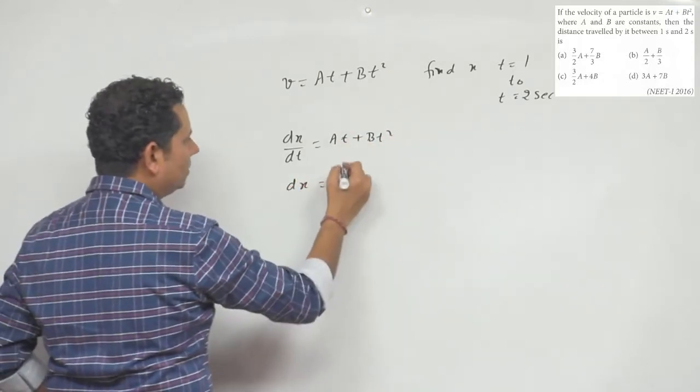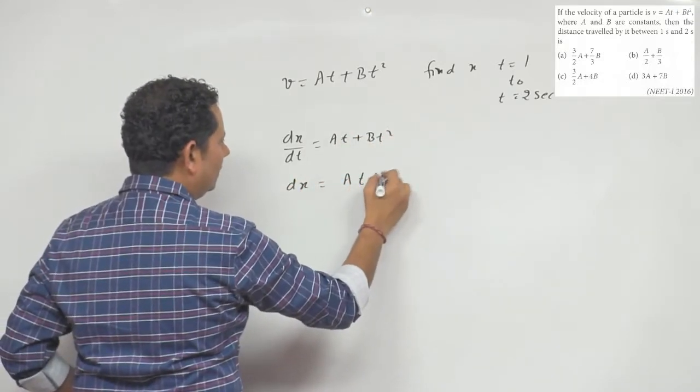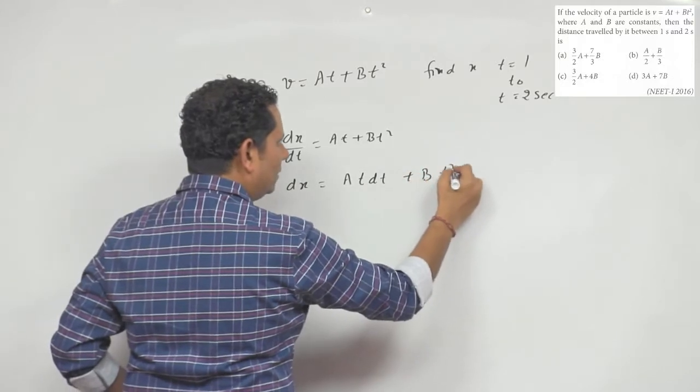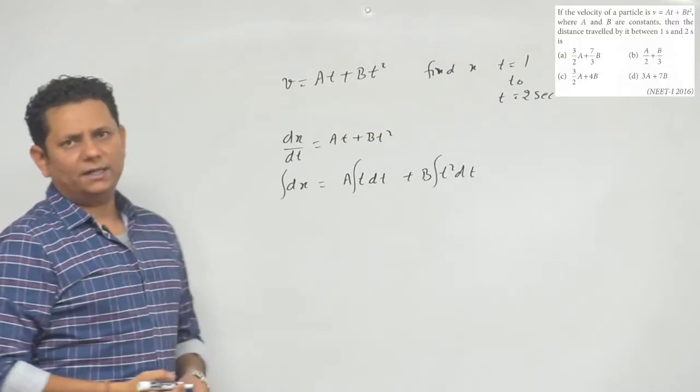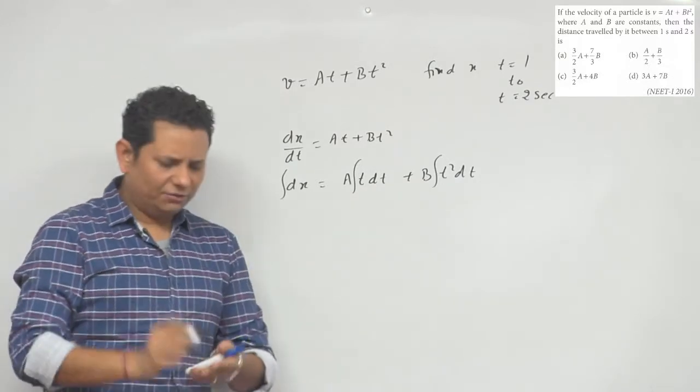v equal to At plus Bt square. If we take dt to the right side, then dx equals At dt plus Bt square dt. Now we need to integrate both sides by putting the integration sign.